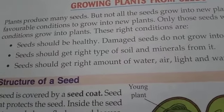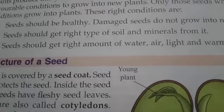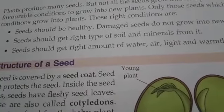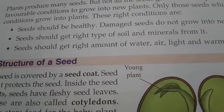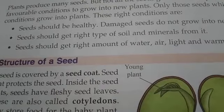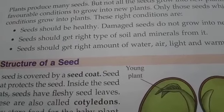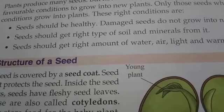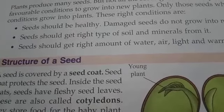Right type of soil and minerals is very important to grow a seed into a plant. The third condition is that seeds should get the right amount of water, air, light, and warmth. A particular amount of water, air, light, and warmth is required for growing a new plant from a seed.